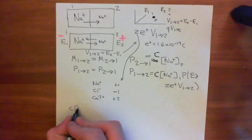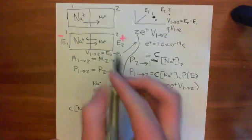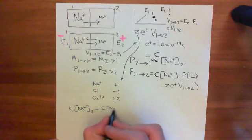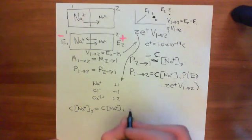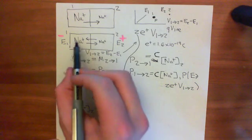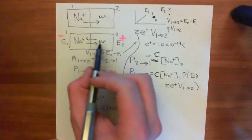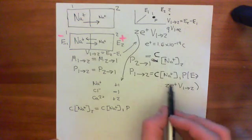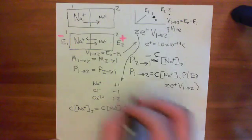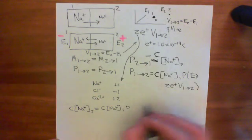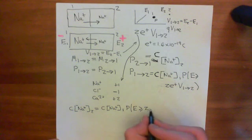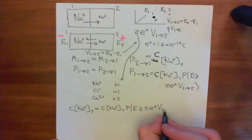Let's set them equal to one another. We get that C times the sodium concentration in compartment 2 — which is the probability that a sodium ion will move from compartment 2 to compartment 1 — is equal to C times the concentration of sodium in compartment 1, times the probability that it will actually be able to do the transition. In a way, this is like the probability that it will bump into the channel, but to move from compartment 1 to compartment 2 it also has to have the necessary energy. That's why we multiply by the probability that the energy is greater than or equal to Z times the charge on the proton times the voltage from compartment 1 to compartment 2.